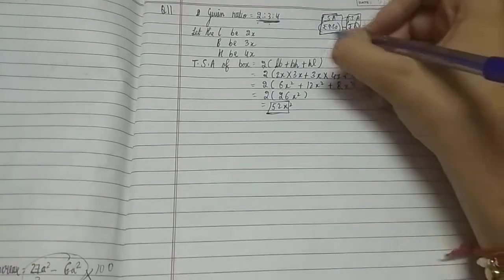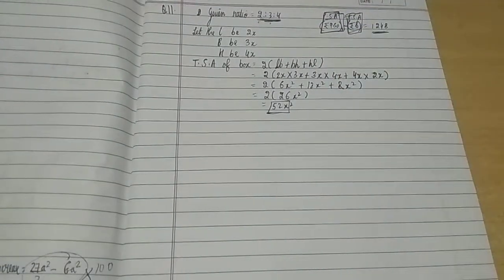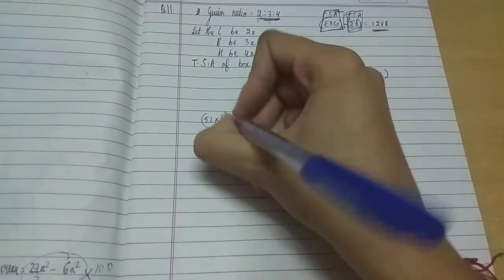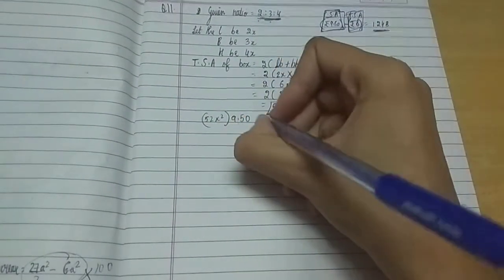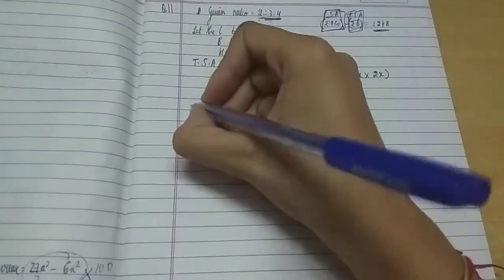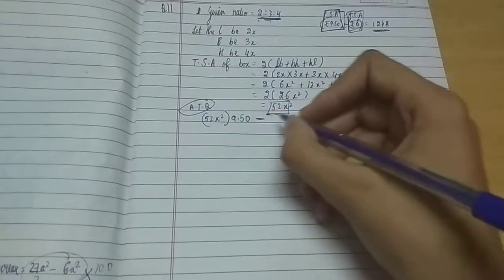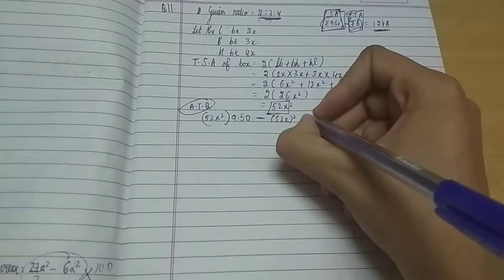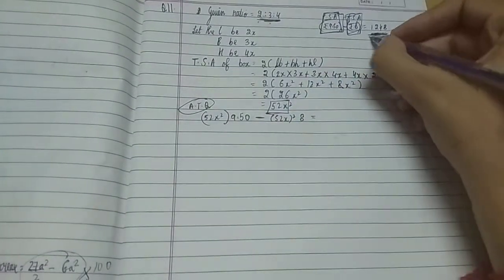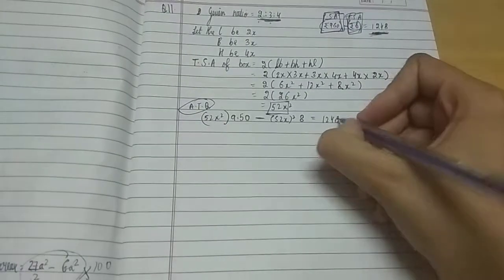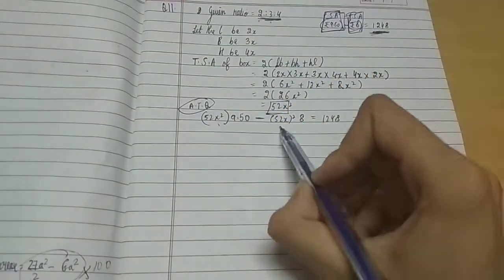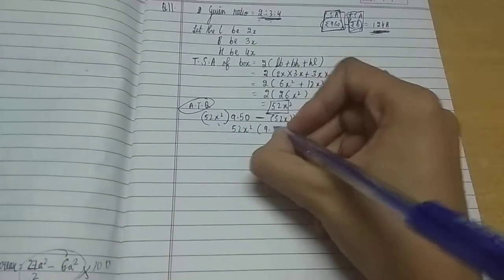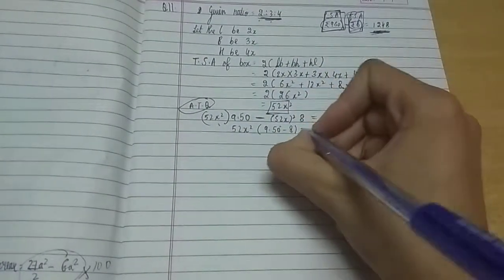As explained, we multiply the total surface area by the two rates: 52x² × 9.50 minus 52x² × 8 equals 1248 according to the question. Taking 52x² as common: 52x² × (9.50 − 8) = 1248, which gives 52x² × 1.50 = 1248.